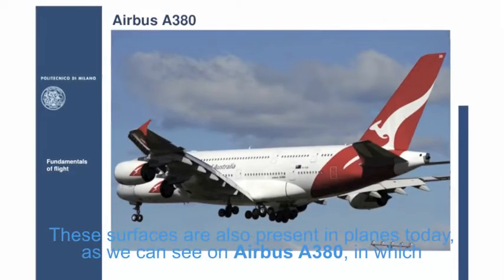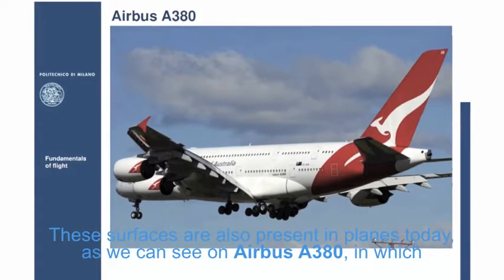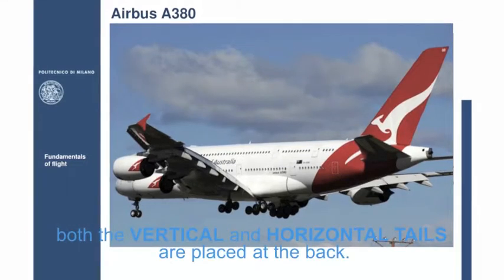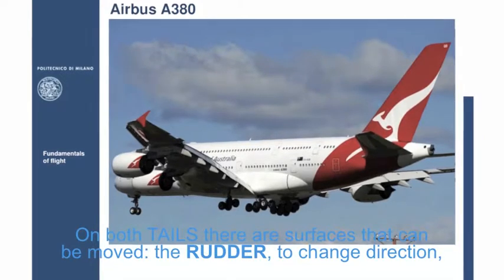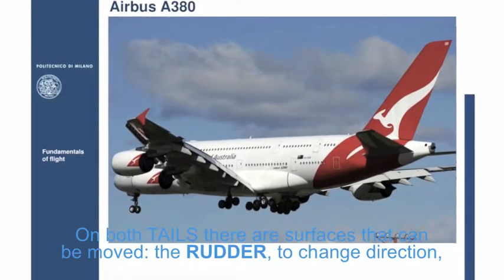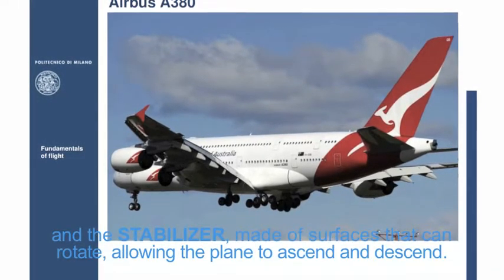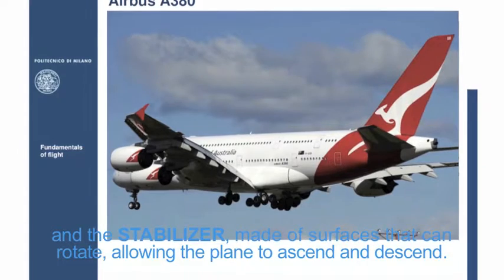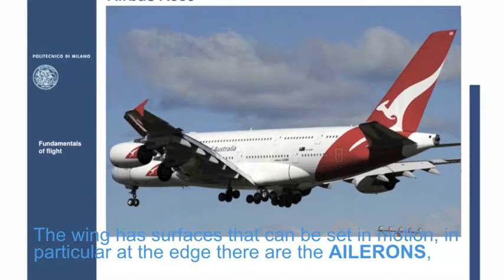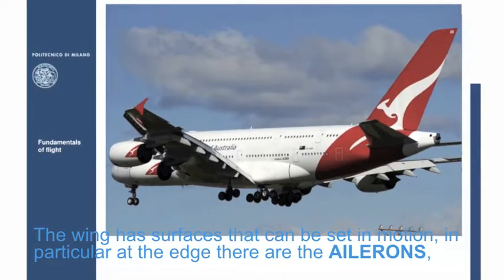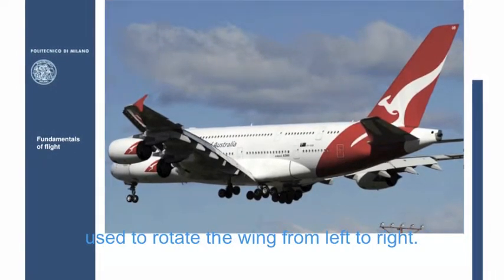These surfaces are also present in planes today, as we can see on Airbus A380, in which both the vertical and horizontal tails are placed at the back. On both tails there are surfaces that can be moved, the rudder to change direction, and the stabilizer, made of surfaces that can rotate, allowing the plane to ascend and descend. The wing has surfaces that can be set in motion, in particular at the edge there are the ailerons, used to rotate the wing, from left to right.